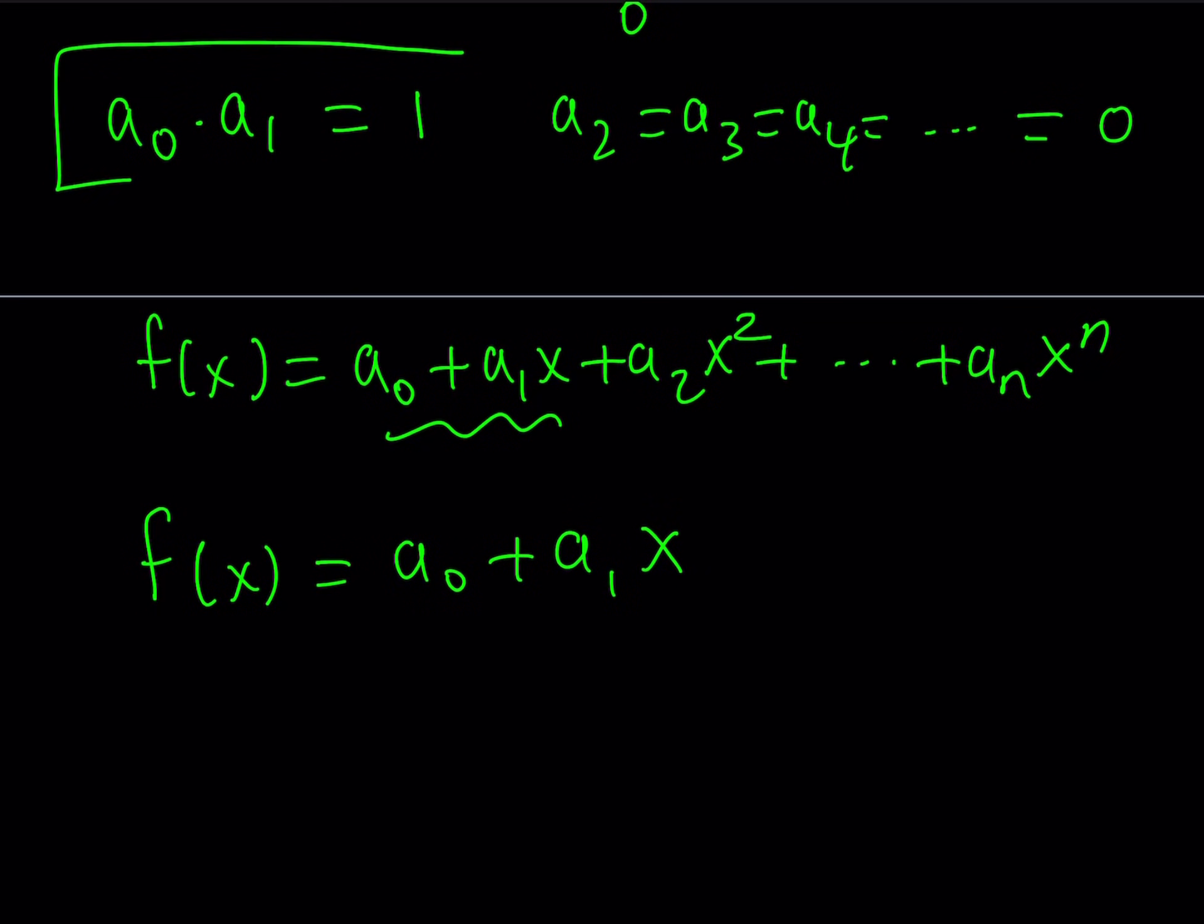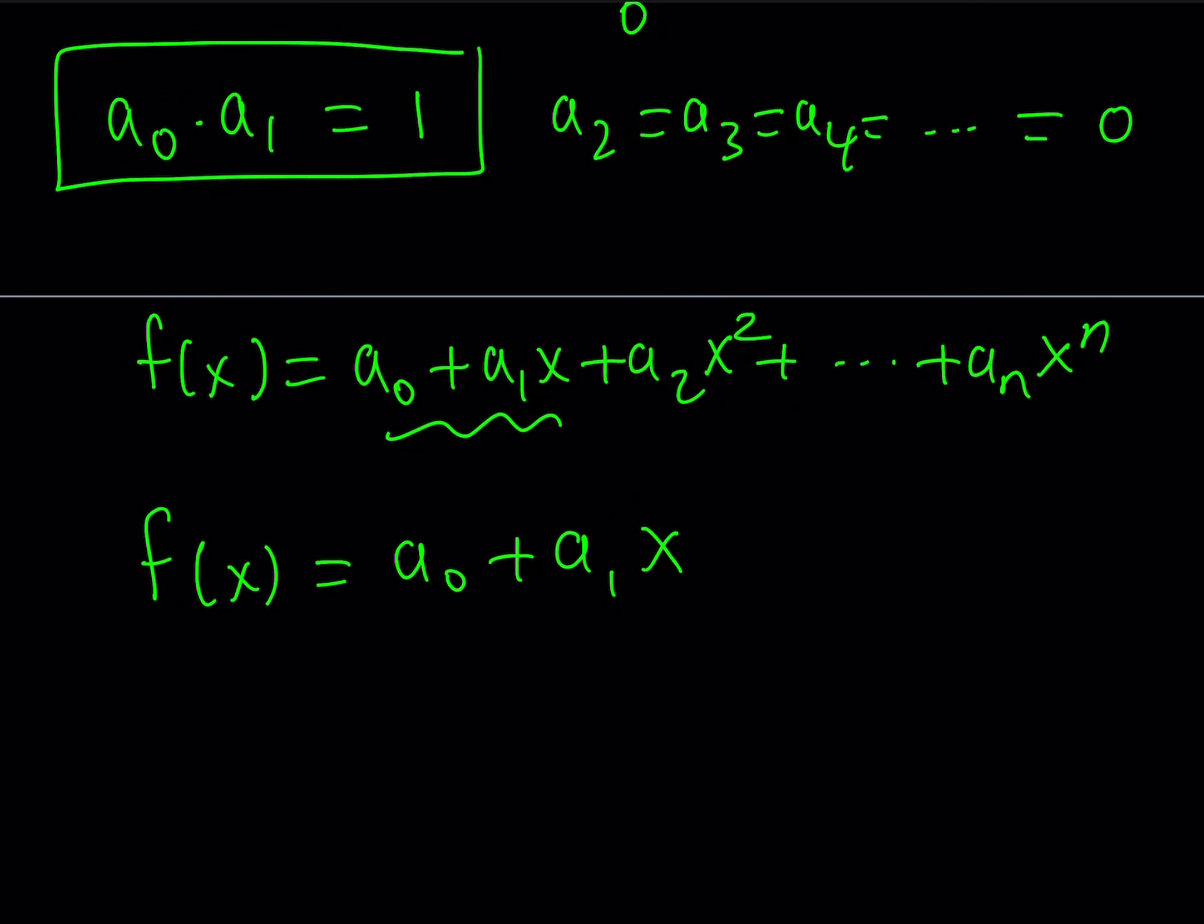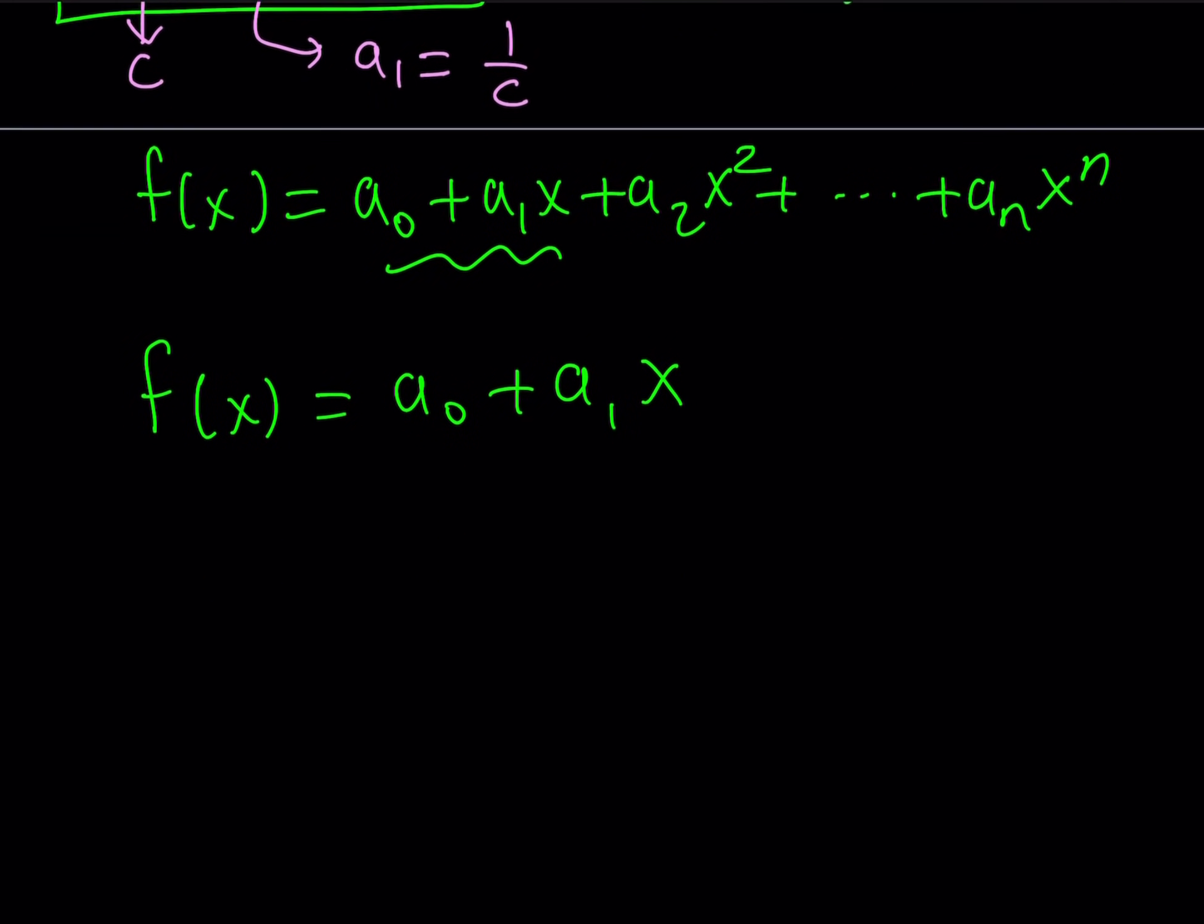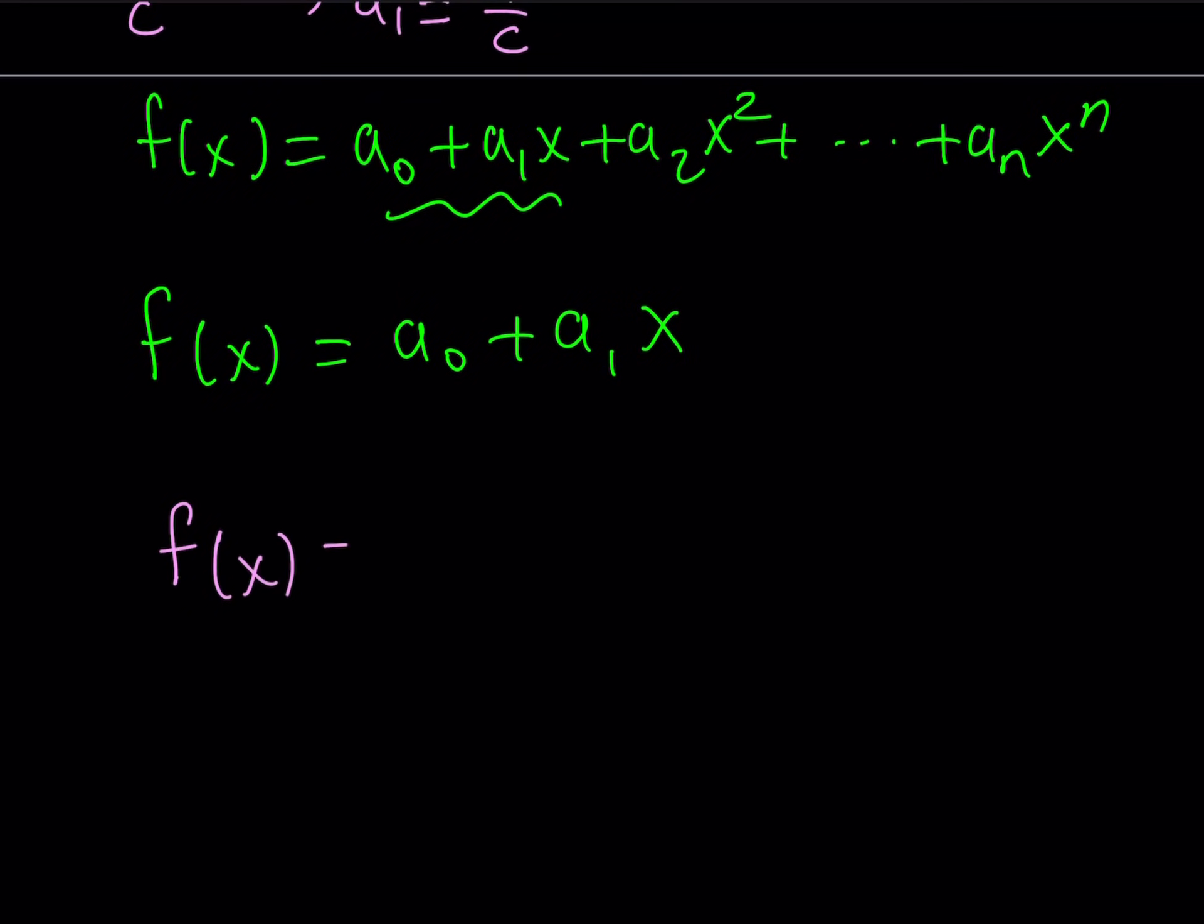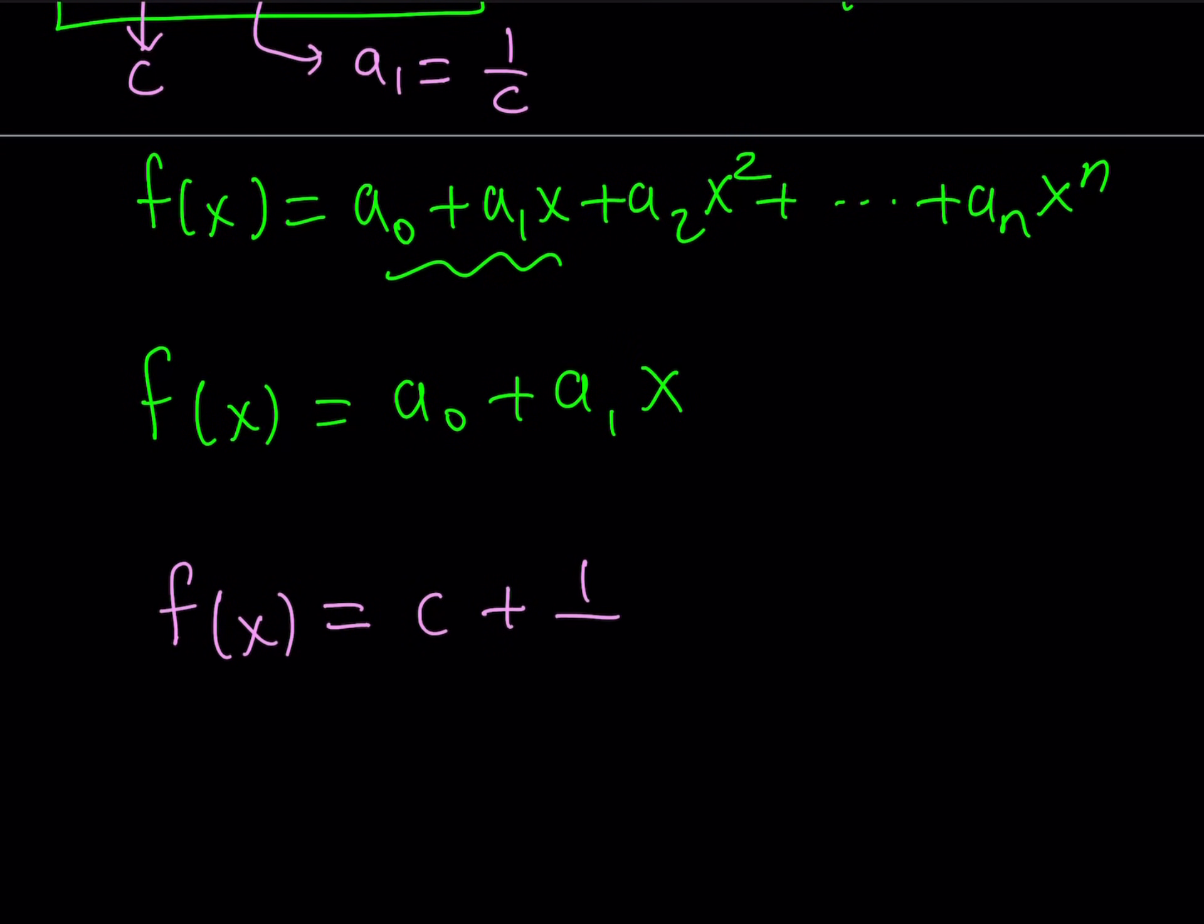But we also have a relationship between a0 and a1. Let's use that relationship to write this in a nicer way. If you assume that a0 is a constant like c - and c is a good constant, we use it with integrals - from here we get that a1 is 1 over c. This allows you to write both coefficients in terms of a third variable, which is a parameter.